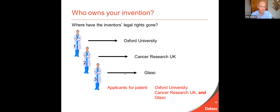The inventors will always be the first owners of the invention. Once you've established who the inventors are, you need to think whether they still have their rights or whether those rights have legally passed to another party. For example, if the first inventor is employed by Oxford University, under that contract of employment any inventions made using university resources in university time will automatically go to the university. If the second inventor was a PhD student sponsored by Cancer Research UK, under that contract of sponsorship her rights have gone to Cancer Research UK. Similarly, if the third inventor was sponsored by Glaxo, her rights have gone to Glaxo. So none of the three inventors still have their rights — they've all passed to third parties.